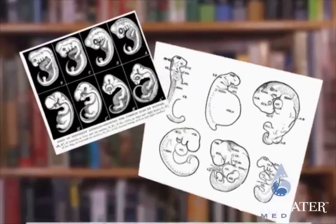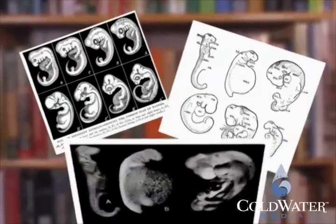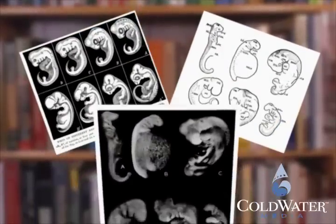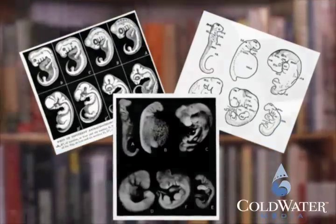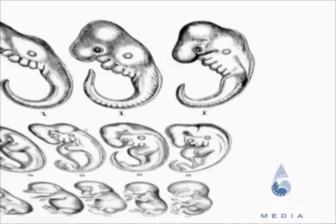It's clear that Haeckel may have fudged his drawings somewhat to look more like his ideal than they actually are. Does that actually take away from what we know about the relationship of embryology to evolution? Not a bit.